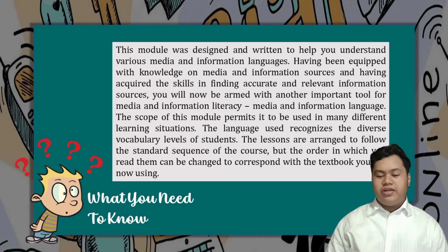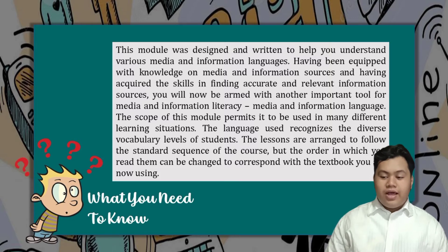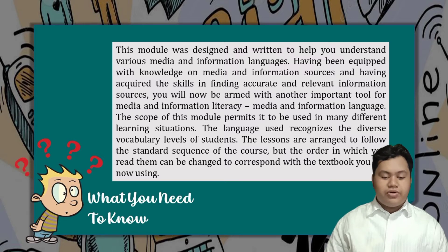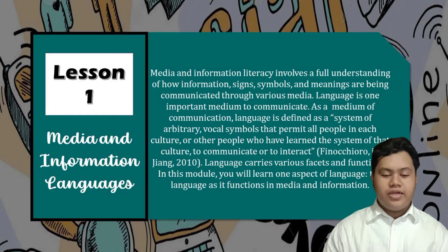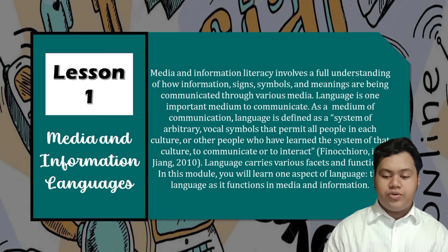This module aims to help you understand various media and information languages. The scope of this module permits it to be used in many different learning situations. Lessons are arranged to follow the sequence of the course, but the order in which you read them can be changed. Media and information literacy involves a full understanding of how information, signs, symbols and meanings are being communicated through various media.